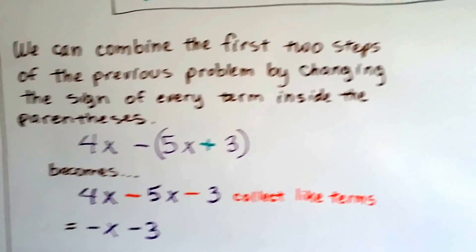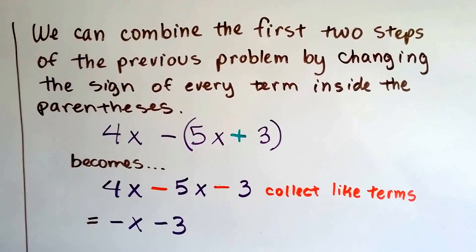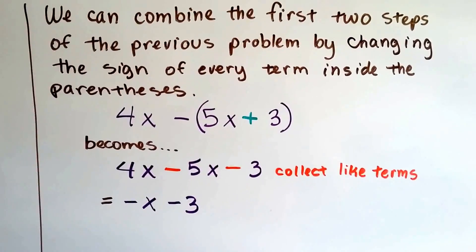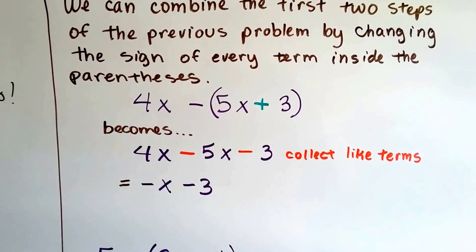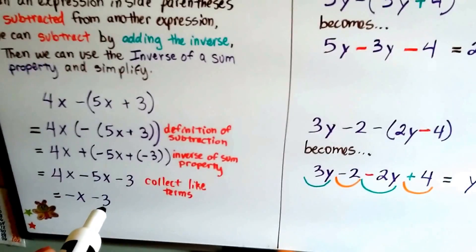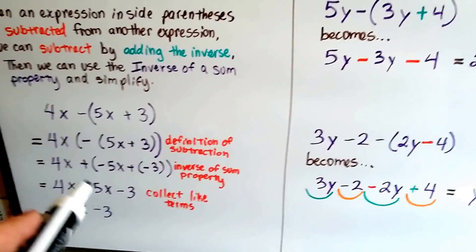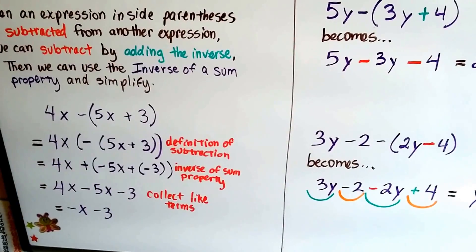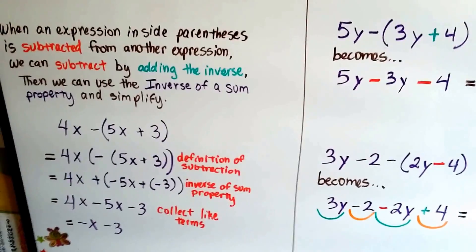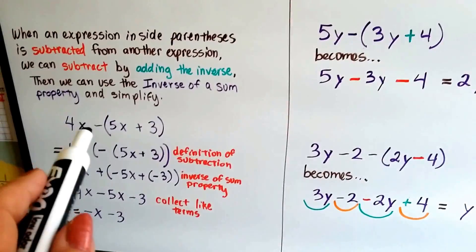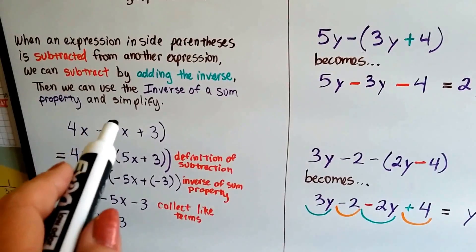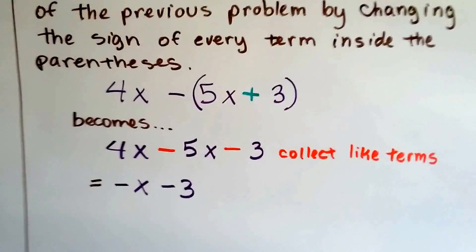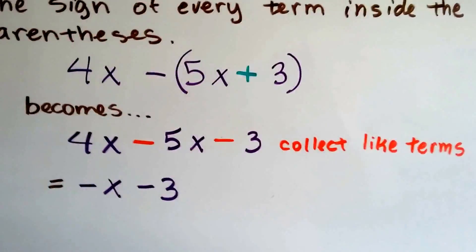We can combine the first two steps of that previous problem by changing the sign of every term inside the parentheses. What if we could get rid of two of those steps? Let's do that. We had 4x minus 5x plus 3 — same thing, 4x minus 5x plus 3.